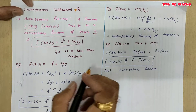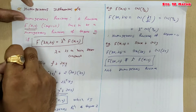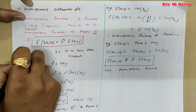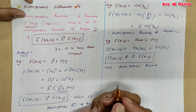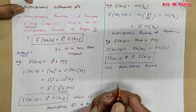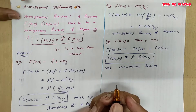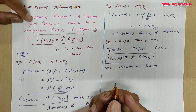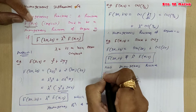So that is the first method by which you can check whether a given function is a homogeneous function or not. There is also a second method.